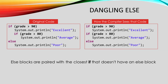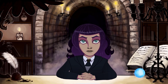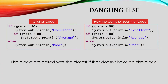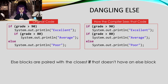You should play with those to see that the output for them is not the same. One difference is the output when grade equals 95. If the else was connected the way the indentation implies in the original code, a grade of 95 will cause "excellent" to be output. But when the code is compiled, a grade of 95 will cause "excellent" and "poor" to be output.